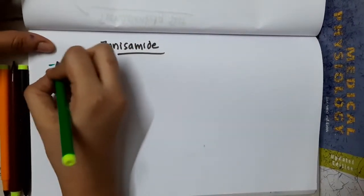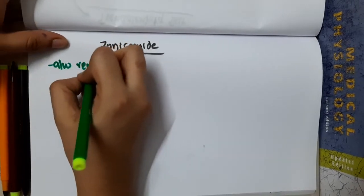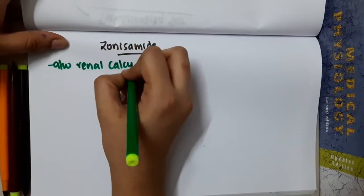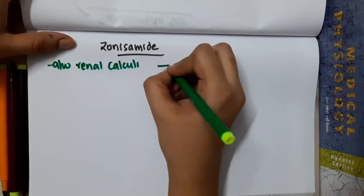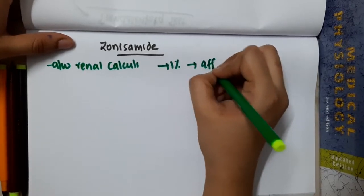Zonisamide is actually associated with renal calculi. Zonisamide is associated with renal calculi and almost 1% of patients are affected with this.